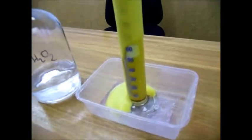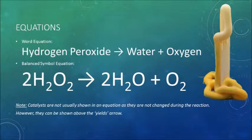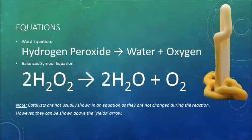So that is the catalytic decomposition of hydrogen peroxide. The word equation for this reaction is: hydrogen peroxide decomposes into water and oxygen. The balanced symbol equation tells us that 2 moles of hydrogen peroxide decomposes into 2 moles of water and 1 mole of diatomic oxygen.